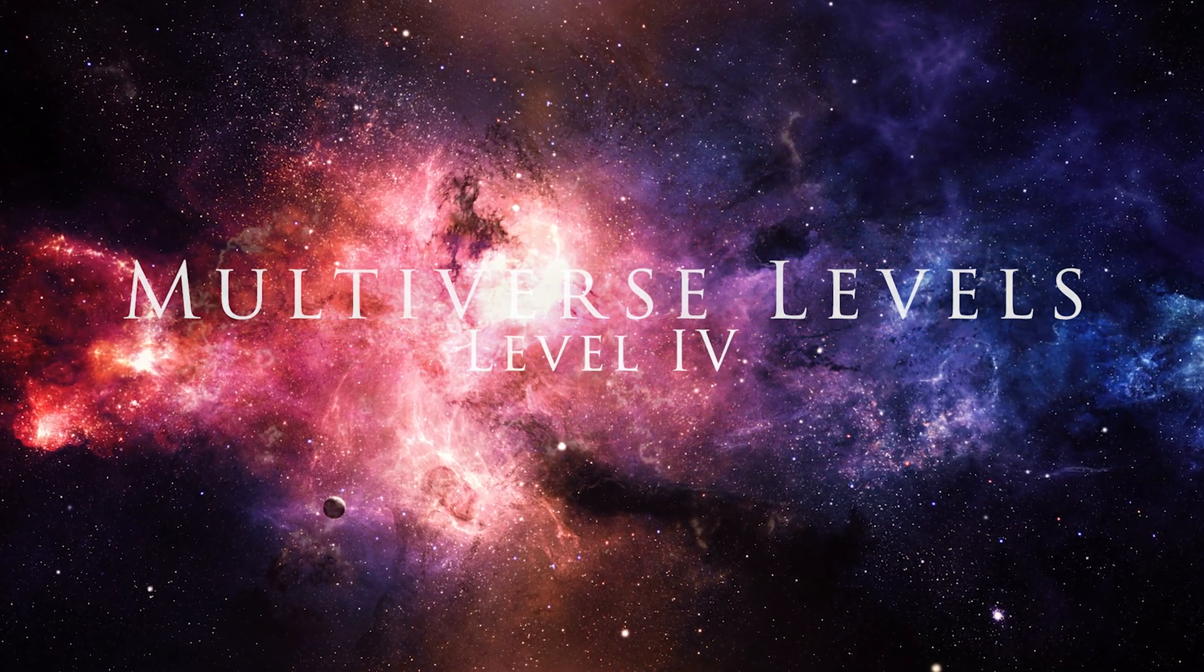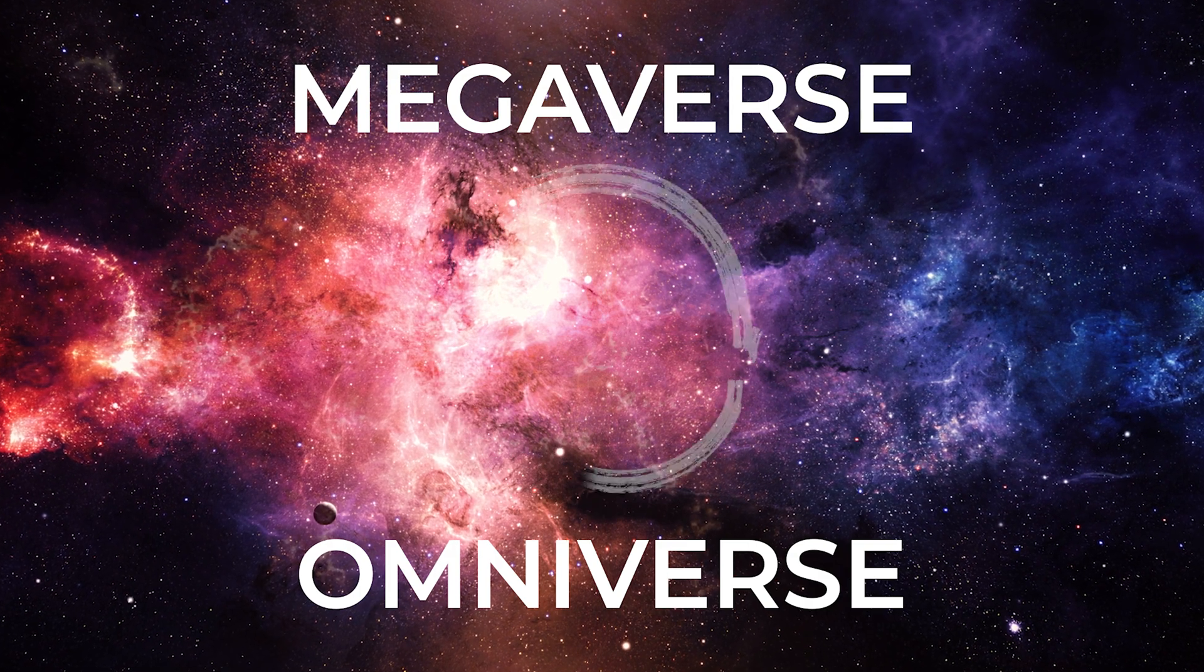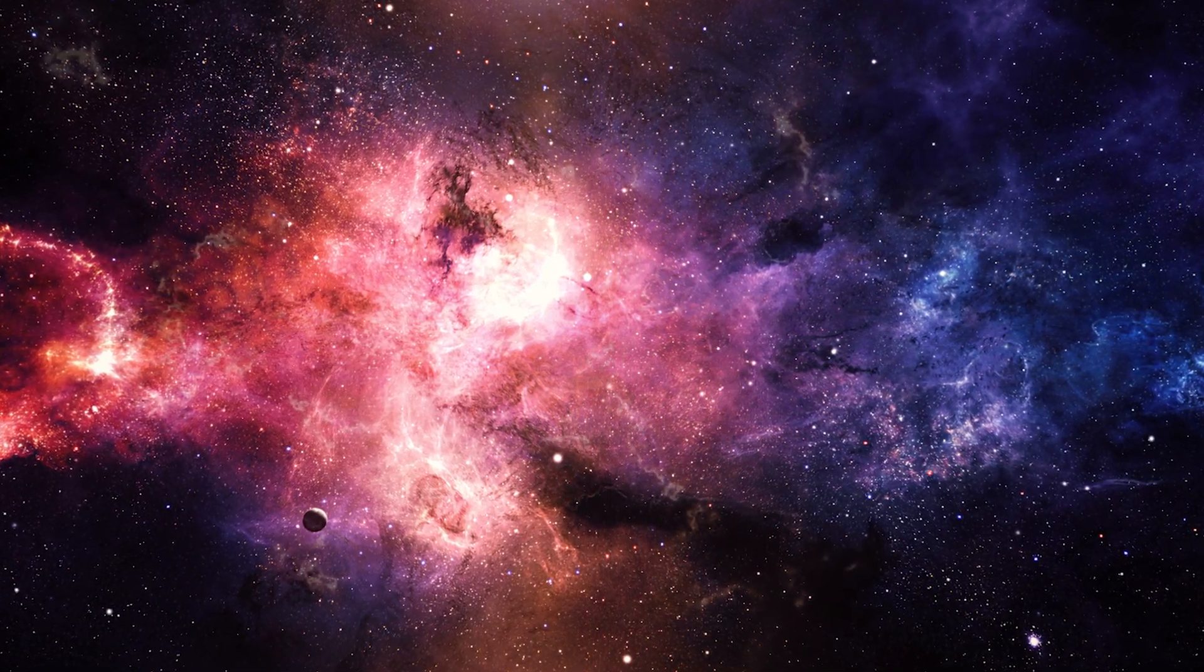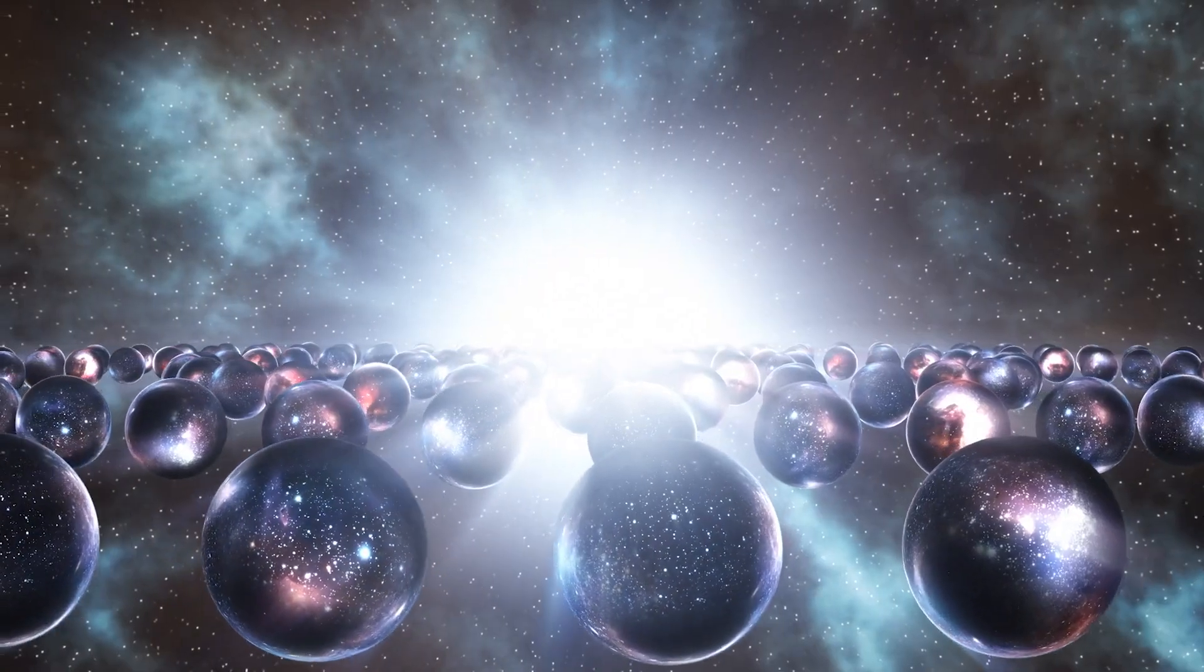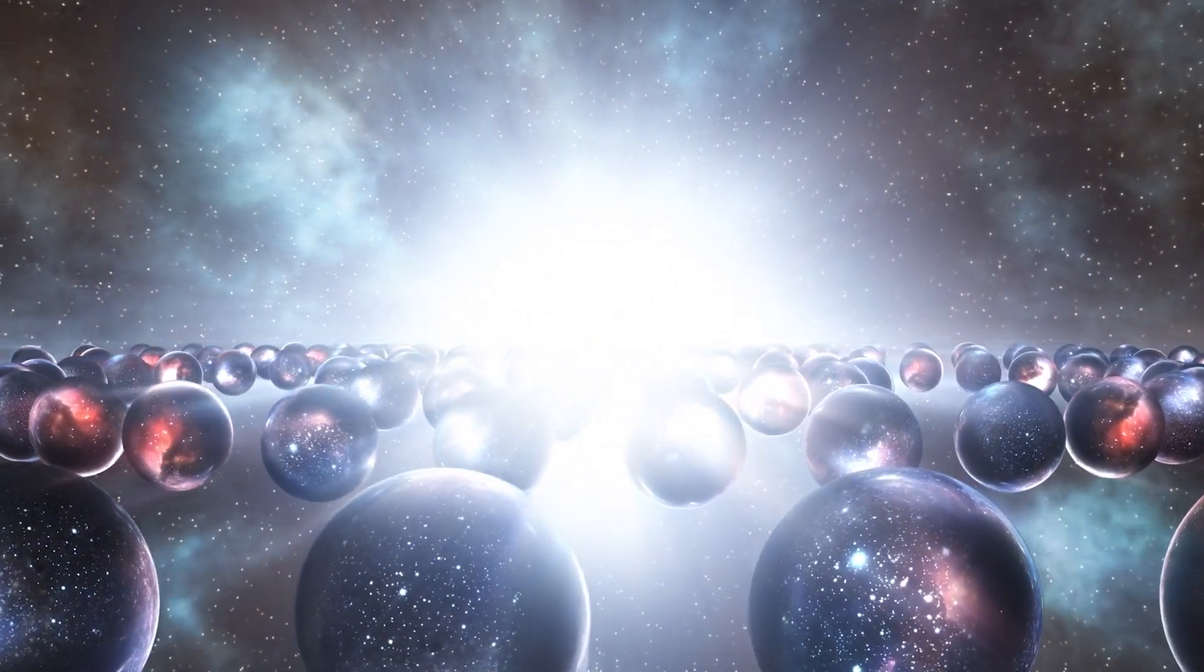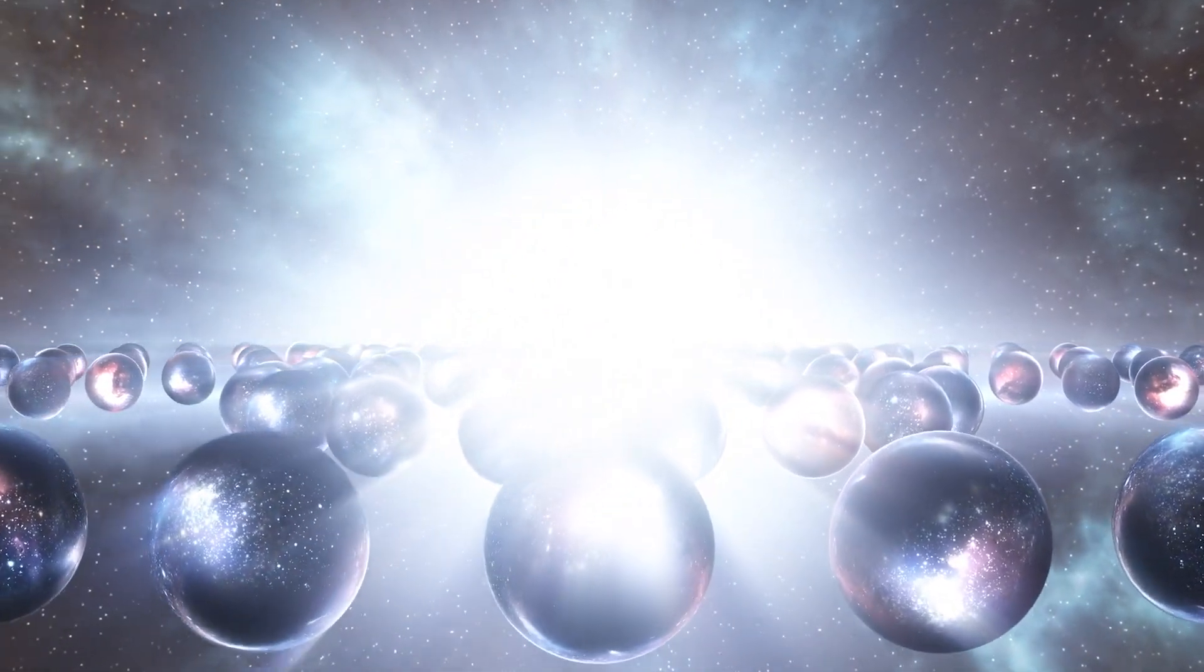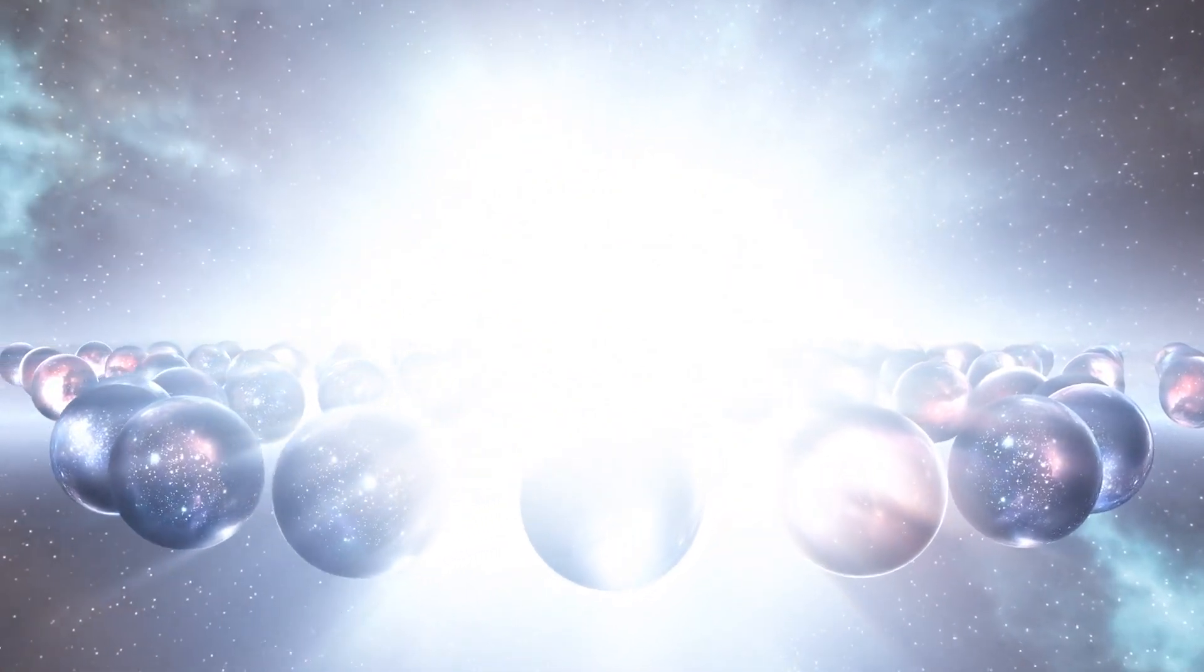The Level 4 multiverse, known as the Megaverse or the Omniverse in Max Tegmark's 4 Universe 4 Multiverse Theory, is a concept that suggests that every universe we observe is just one part of a larger multiverse that encompasses all possible universes and all possible states of reality. This type of multiverse is thought to be infinite in size and complexity and it's thought to contain every possible combination of particle or quantum arrangements.